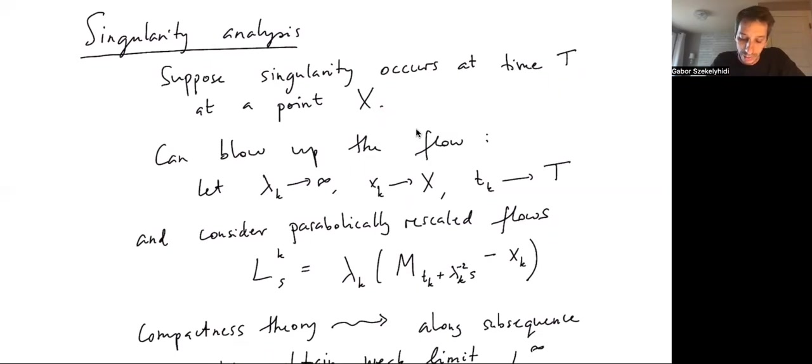To understand the singularity, what we can do is perform a rescaling, basically extract a kind of blow up to see what's happening at some small scales. To do a very general blow up, we can take a sequence of scales going to infinity, we can take a sequence of points converging to X, and a sequence of times converging to capital T. Probably it's a good idea to take these times less than T, so we're looking at times where the flow is not yet singular.